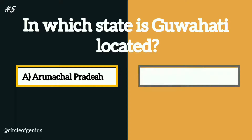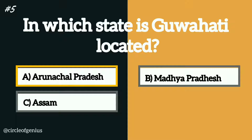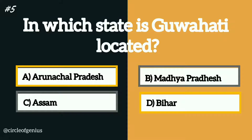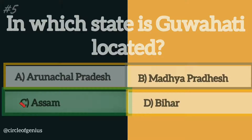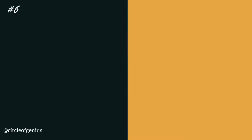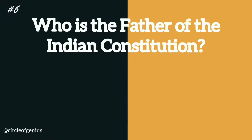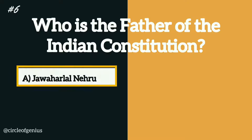Question number five: in which state is Guwahati located? Option A: Arunachal Pradesh, B: Madhya Pradesh, C: Assam, D: Bihar. The correct answer is option C, Assam.